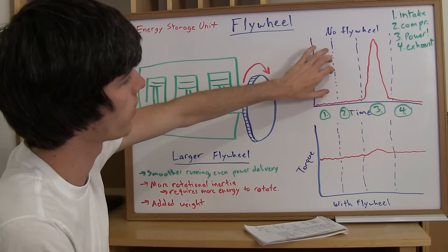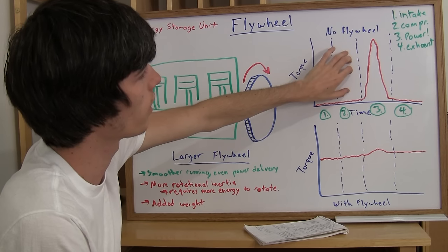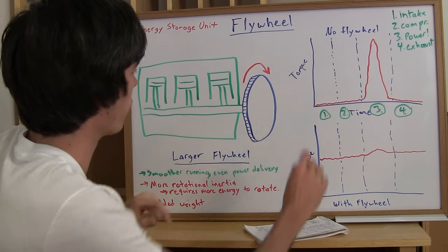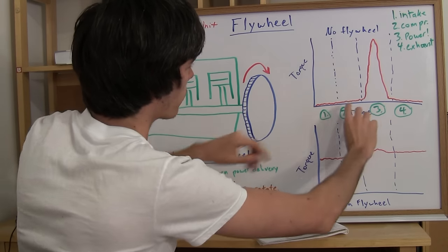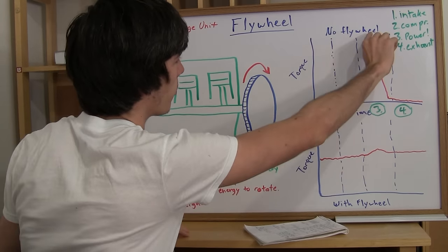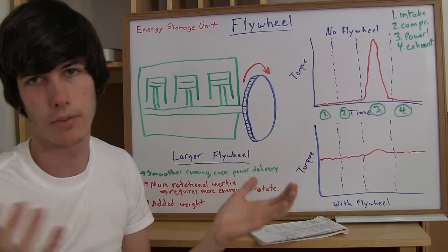So you've got intake occurring in the first stage, your compression occurring in the second stage, and then you've got your power stroke. So your engine's not producing any torque when you're not in that power stroke, and then once you get to it you have a peak of power. So you'd have a jerk if you were in the vehicle.